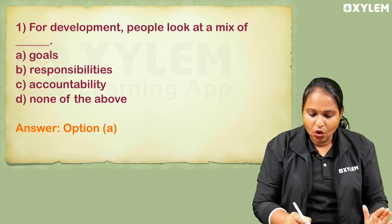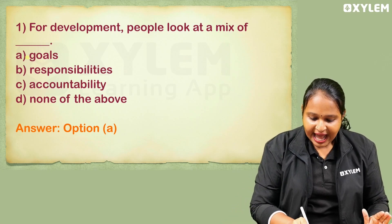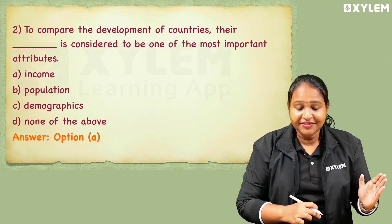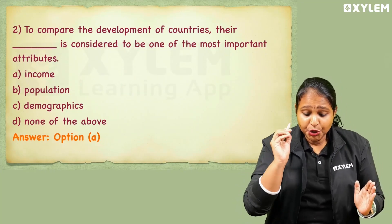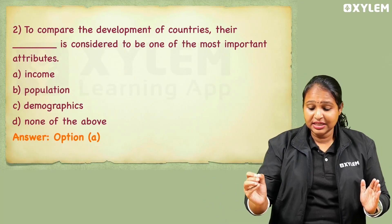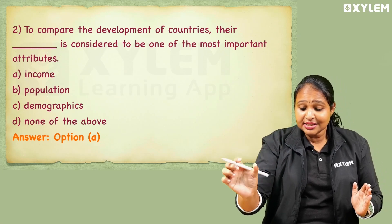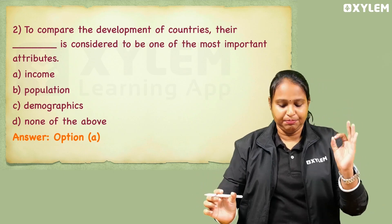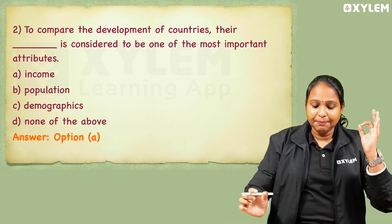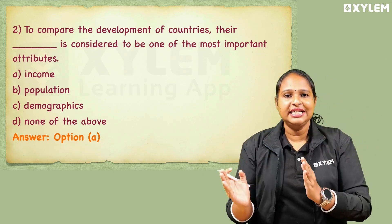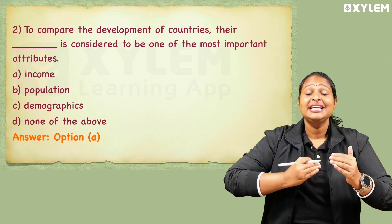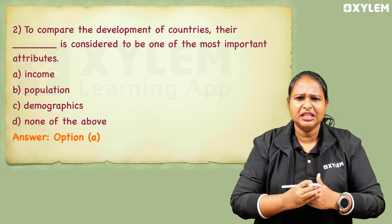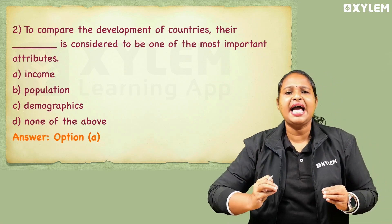To compare the development of countries, income is considered to be one of the most important attributes. That means when we are doing the development comparison, income is the most important attribute.